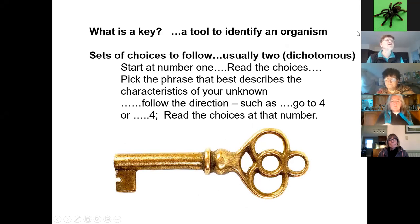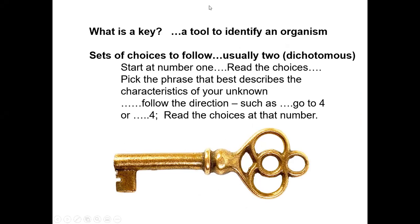You'll notice that on that first page I actually did this 10 years ago, so some of those older books were still in use. So again, what is a key? It's a tool to identify an organism. There are sets of choices to follow, usually two — dichotomous is the word. You always have to start at number one in a flow chart, always start at the top, read the choices, and pick the phrase or choice that best describes the characteristics of your unknown organism. You then follow what it says to do, such as 'go to four.'